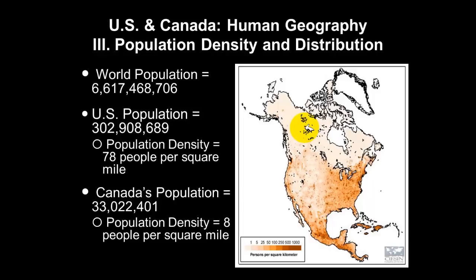Northern Canada is very frigid, very cold. So we see the majority of the Canadian population concentrated in certain areas. Taking a look at the map key, it shows us that the darker spots mean more densely concentrated people — more people per square mile.